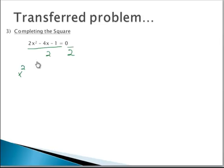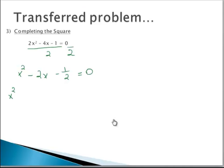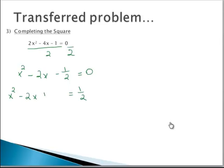So we get x squared minus 2x minus 1 half equals 0. Move the constant to the other side, so we have x squared minus 2x equals 1 half. Take half of 2 and square it — half of 2 is 1, and 1 squared is 1 — so we add 1 to both sides.